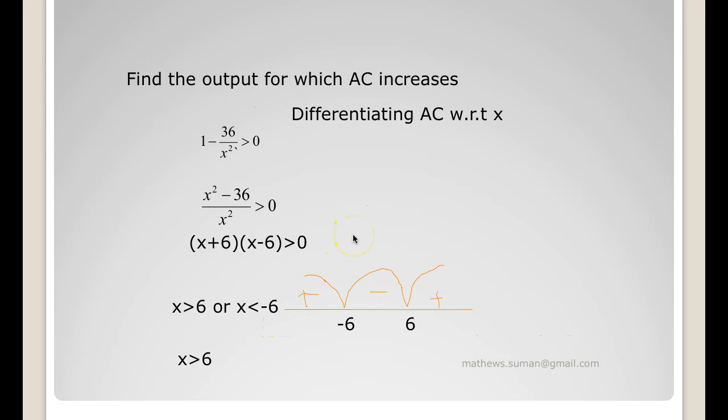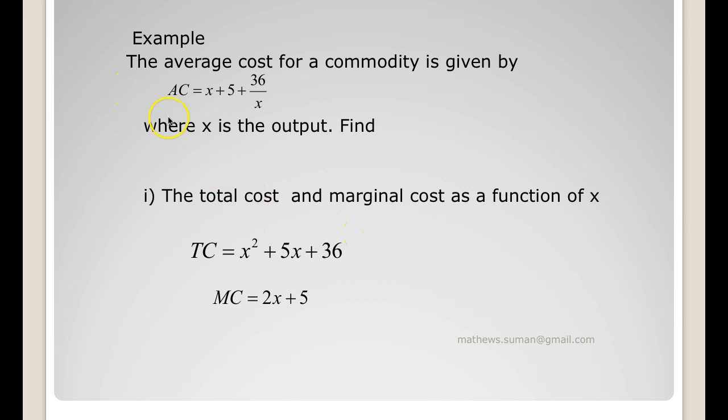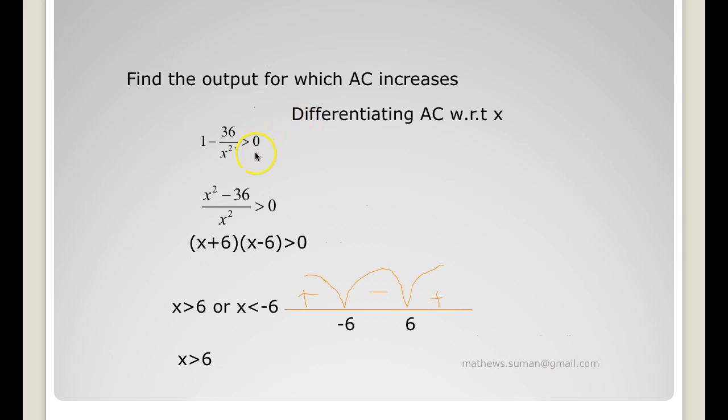Find the output for which average cost increases. To find the output for which average cost increases, we find the derivative of the average cost and find the range for which the derivative is greater than 0. Your average cost is x plus 5 plus 36/x. Differentiating with respect to x you get 1 minus 36/x squared. We want this to be greater than 0 because the average cost is increasing.